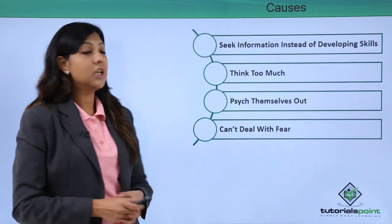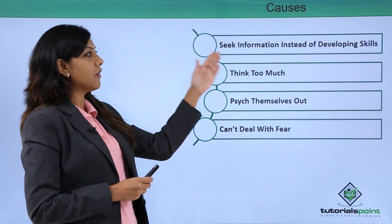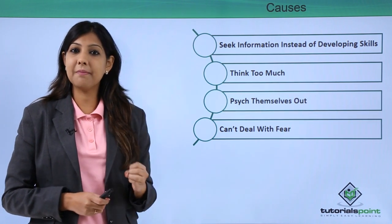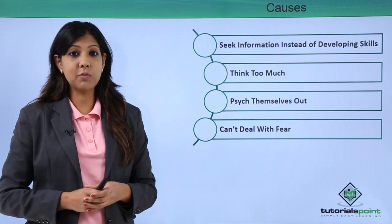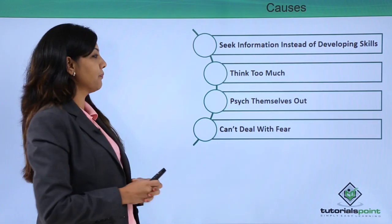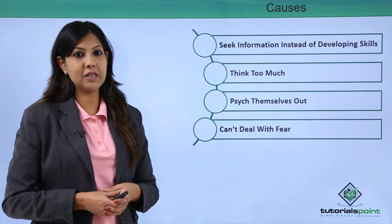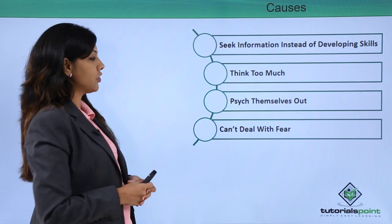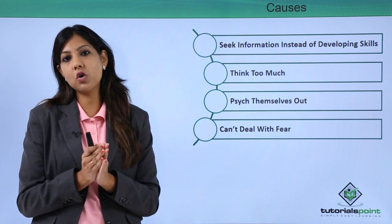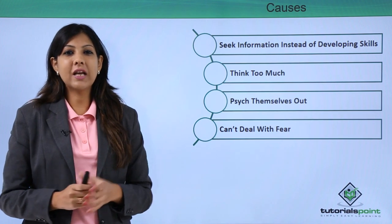Certain causes leading to less social intelligence today are: seeking information instead of developing skills; thinking too much — people want to meet someone from Facebook but psych themselves out worrying whether the person will like them; being bombarded with too much social media information; and an inability to deal with fear, living in an uncomfortable or anxious state about things that may not even be true.